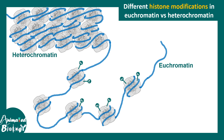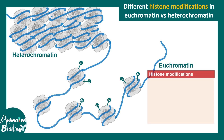We know that there are different parts of the chromatin which are highly condensed, known as heterochromatin, and there are some parts of the chromatin which are less condensed and more open towards transcription factors or any other kind of protein, known as euchromatin. Euchromatin and heterochromatin have different kinds of modifications, which we have talked about in a different video.